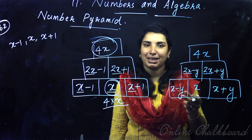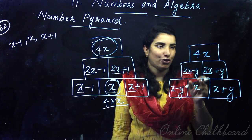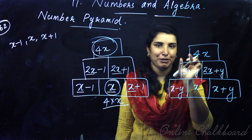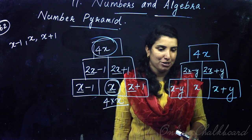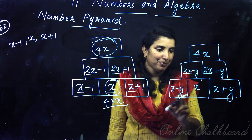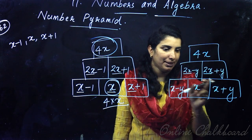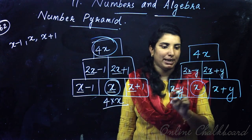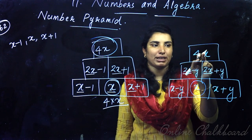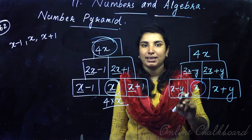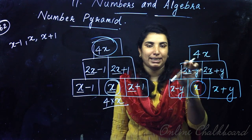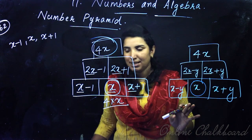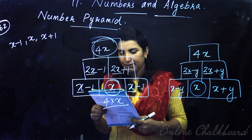Then what? 0. Then what? 4x. This middle number is 4 times. Finally get the answer.